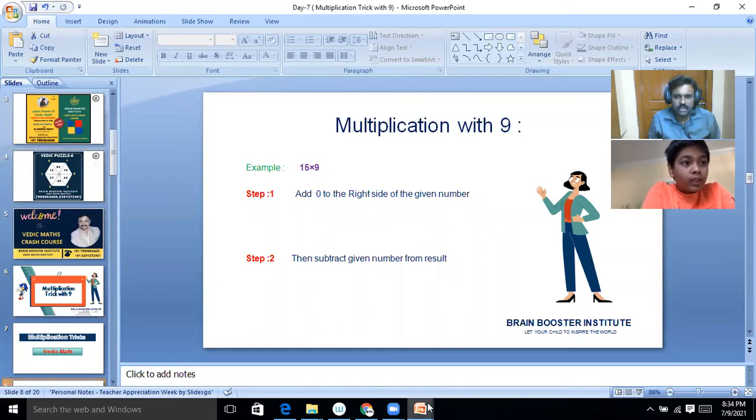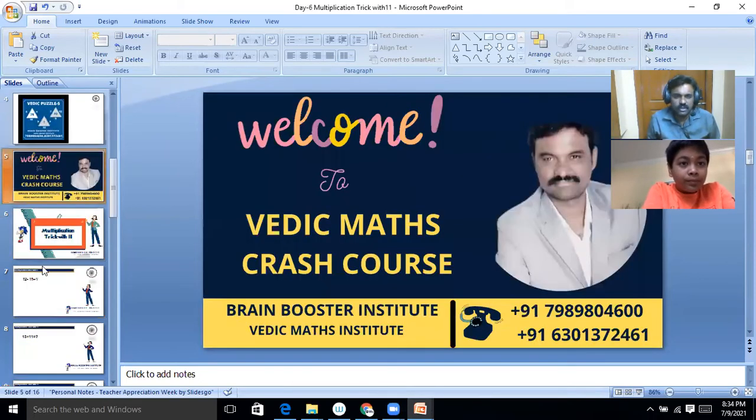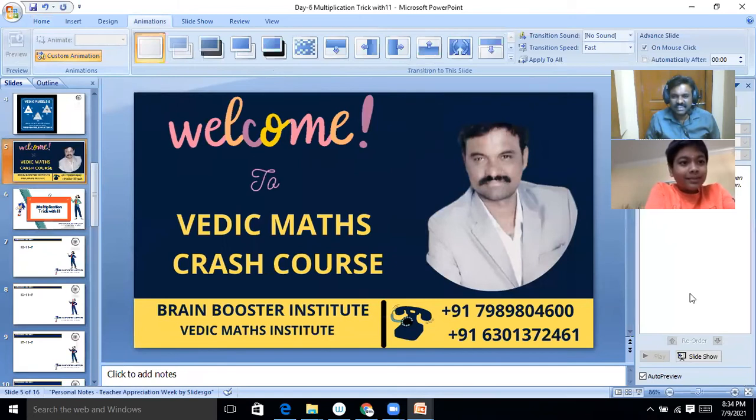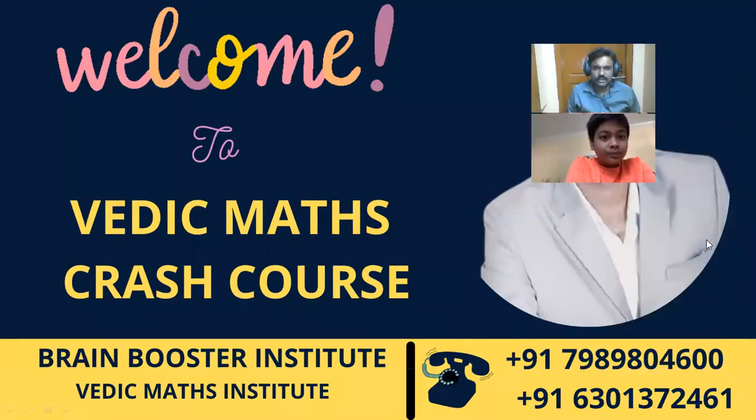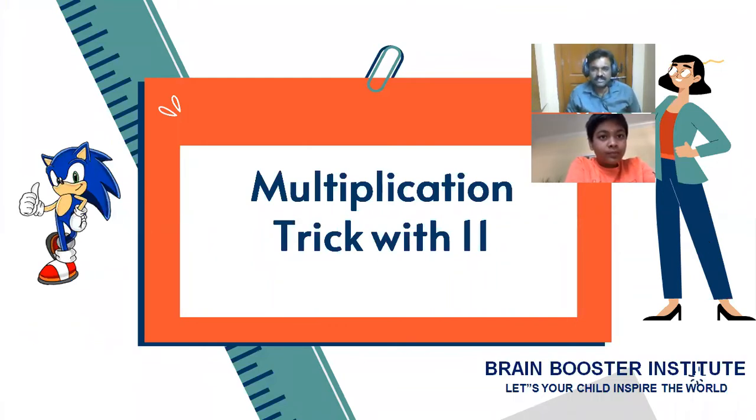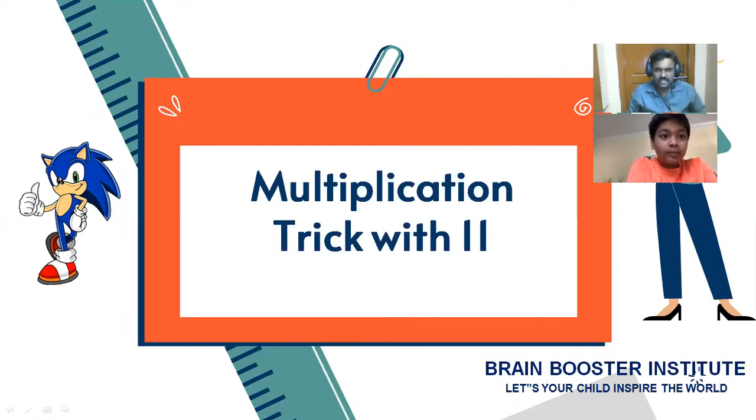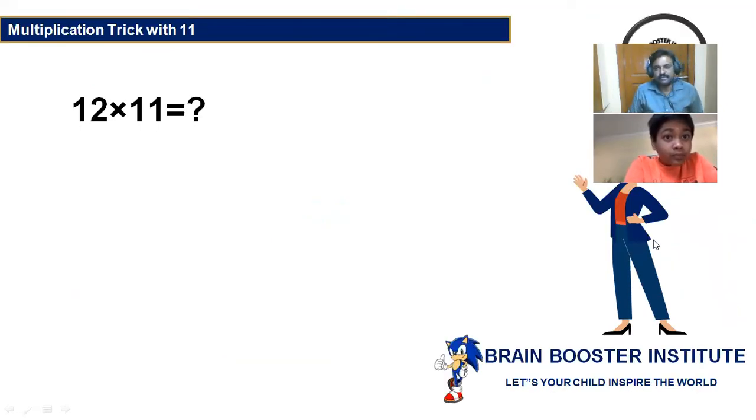As you are 11 years old, Mr. Ishwar, now let us go with 11 only. Multiplication trick with 11. See how amazing - you are 11 years old, we are playing with 11. Now do you want to play with 11, my dear Ishwar? See, 12 into 11 - 132. Wonderful.